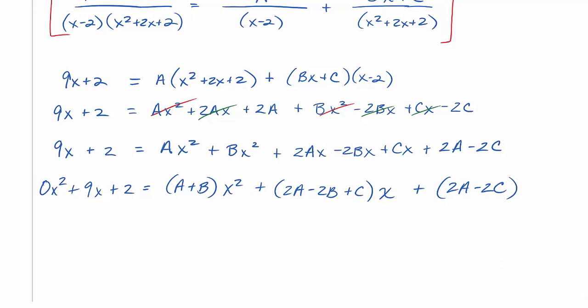Now we're ready to correlate. 0 has to be equal to a plus b. 9 has to be equal to 2a minus 2b plus c. Now if that 2a had been negative, I would have put a plus in front and kind of tuck the negative in with the 2a inside the parentheses. And then lastly, 2 is going to have to be equal to 2a minus 2c.